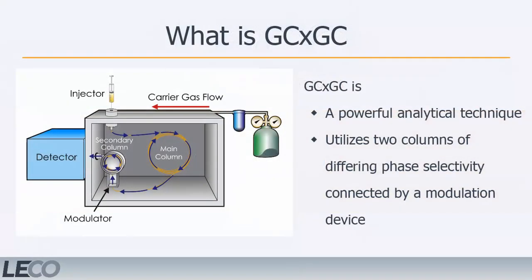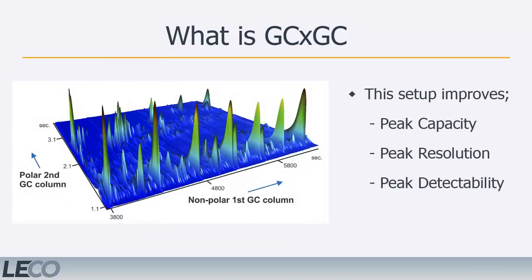GC×GC, also known as comprehensive two-dimensional gas chromatography, is a powerful analytical technique that utilizes two columns of differing phase selectivity connected in series by a modulation device. This setup increases peak capacity, peak resolution, and peak detectability.